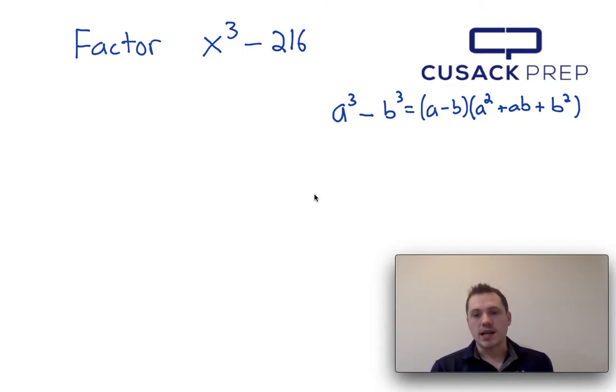Well the first thing I recognize is that both x cubed and 216 represent values that are perfect cubes. Since I'm taking the difference of these two values I can factor this using the difference of cubes formula which I have presented here on the right hand side.